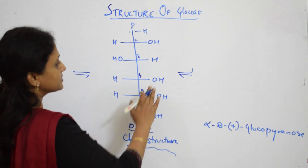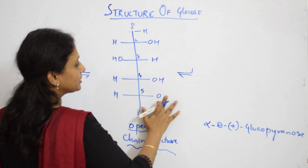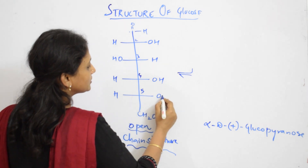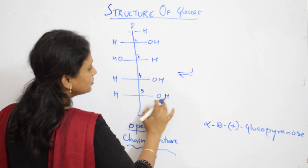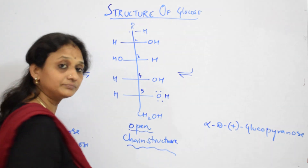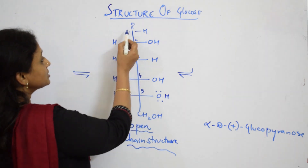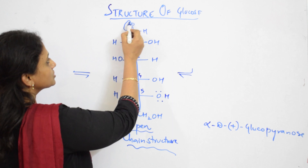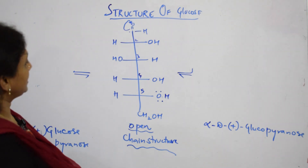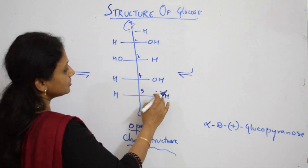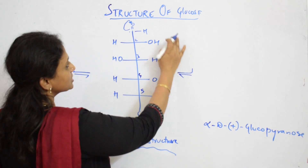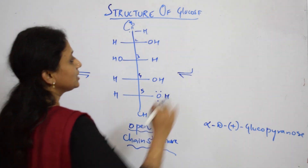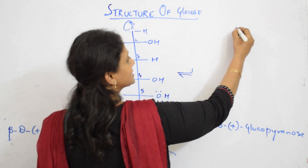When speaking about the alpha form, observe carefully. Carbon one, two, three, four, five, six — correct. In the formation of cyclic structures, this bond is going to shift, and the lone pair of electrons forms a cyclic structure, and this H shifts to the first carbon.